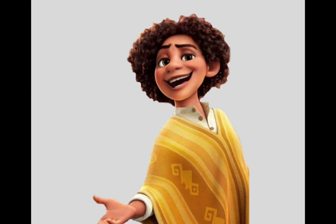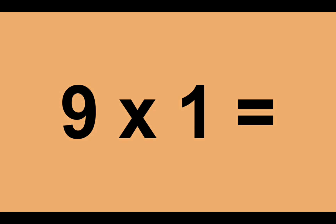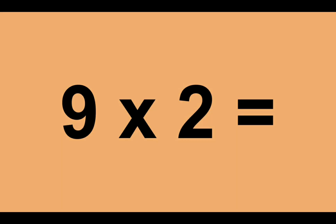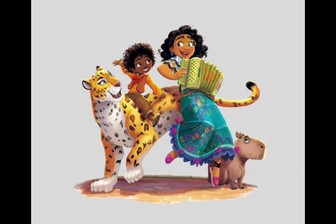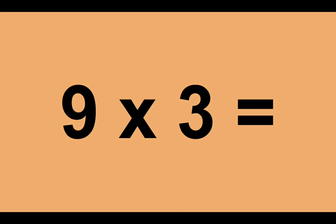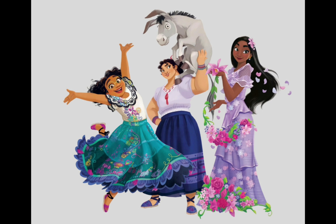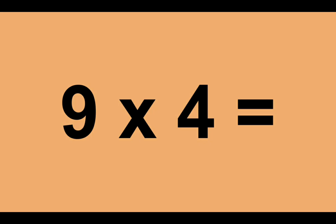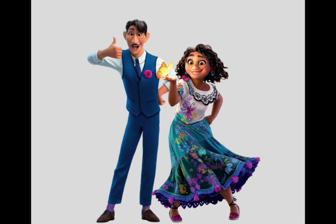9 times 0 equals 0. 9 times 1 equals 9. 9 times 2 equals 18. 9 times 3 equals 27. 9 times 4 equals 36. 9 times 5 equals 45.